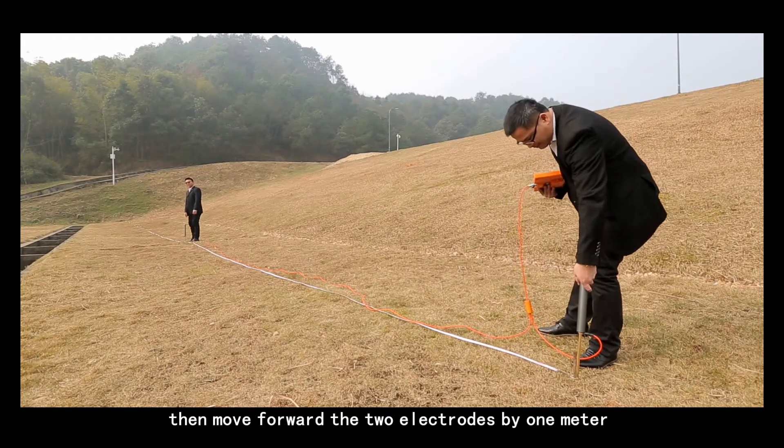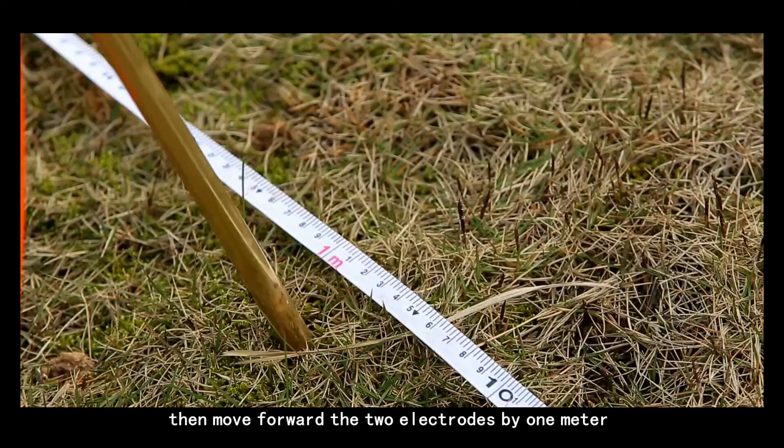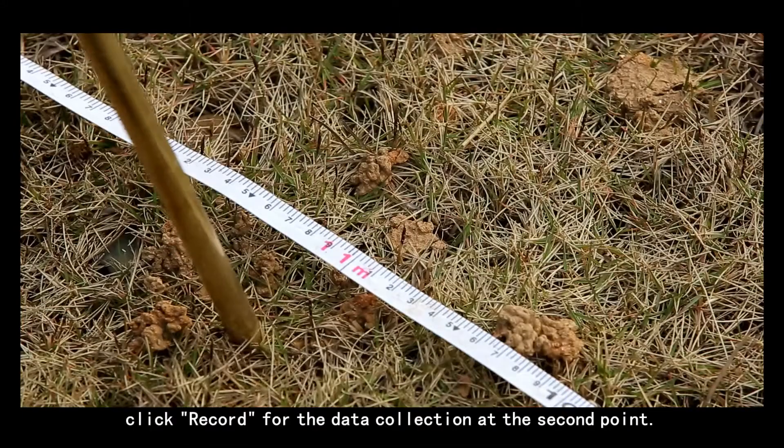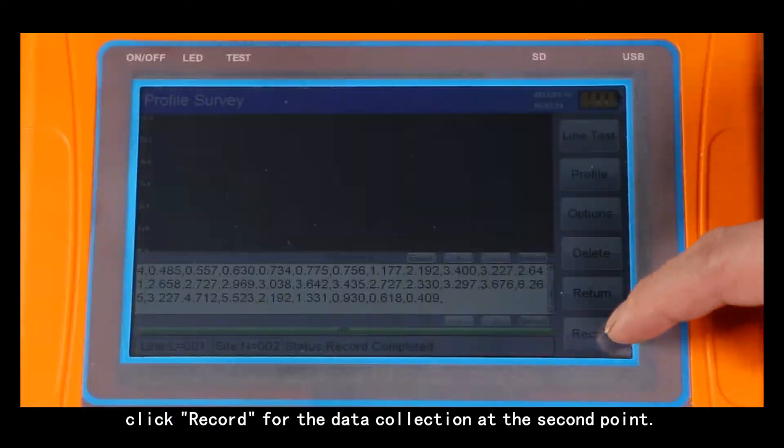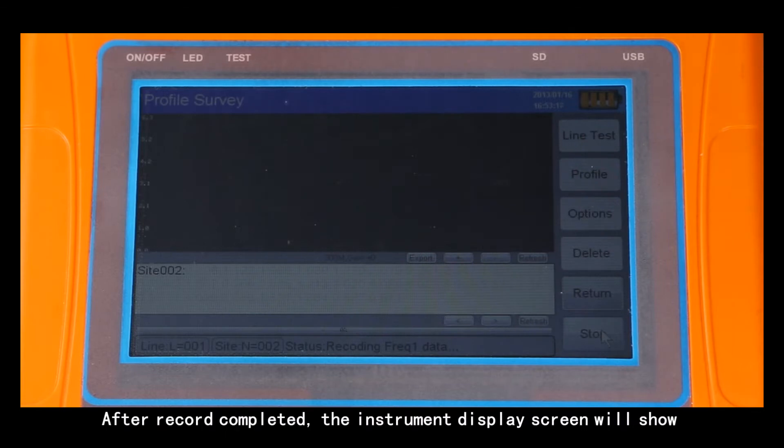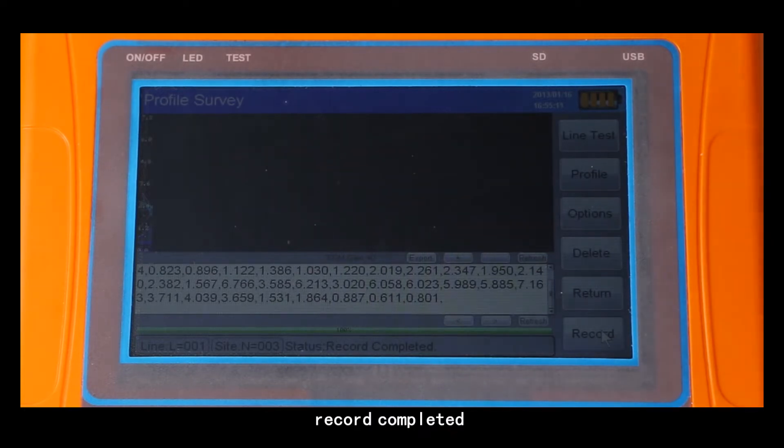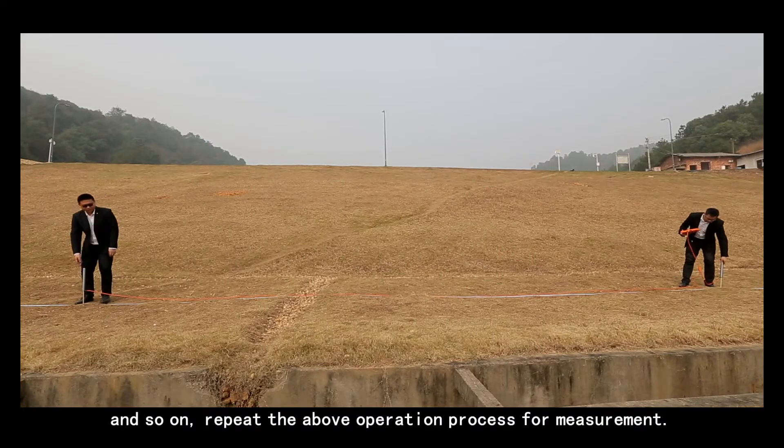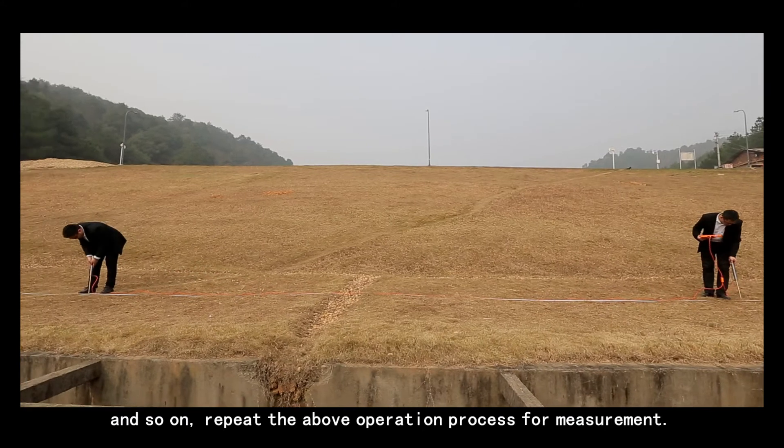Then move forward the two electrodes by one meter. Click record for the data collection at the second point. After record completed, the instrument display screen will show record completed. And so on, repeat the valve operation process for measurement.